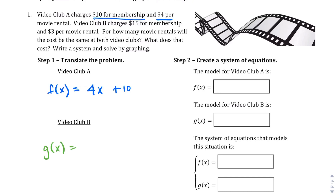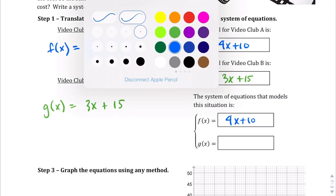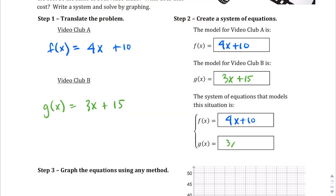For Video Club B, we use g(x): the rate is $3 per movie rental plus a $15 membership fee, so g(x) = 3x + 15. We write both equations — 4x + 10 and 3x + 15 — to prepare for graphing.